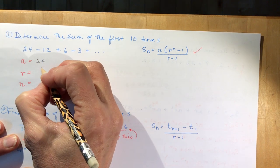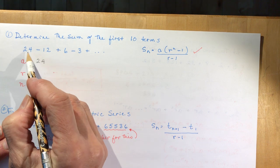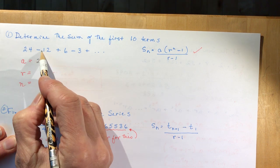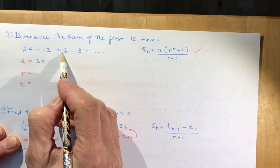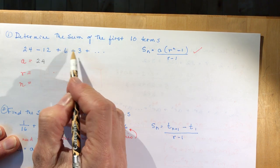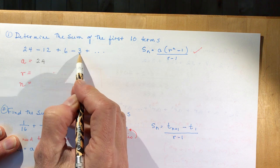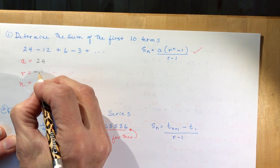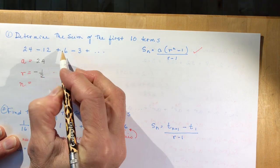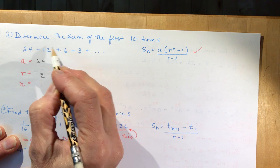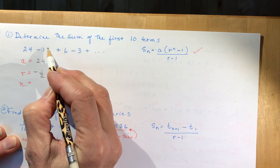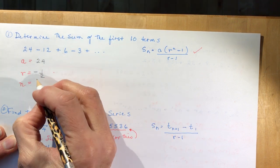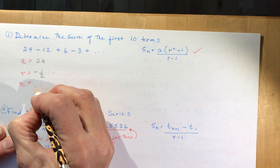My r is found by dividing one term by the previous: minus 3 divided by 6 is minus one half. You can check: 6 over minus 12, minus 12 over 24 — all consistent. My n is 10.